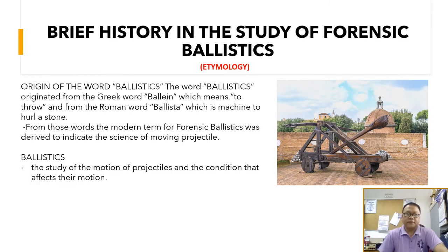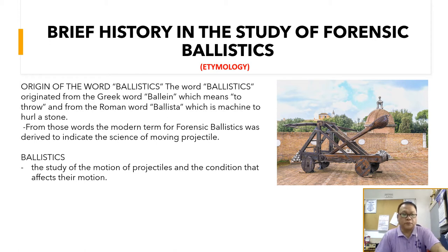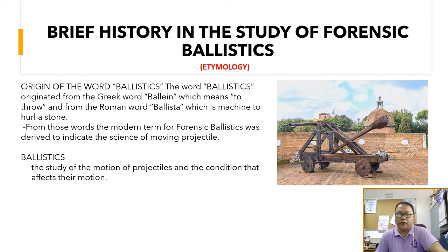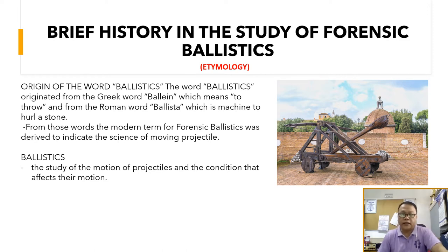Let's go first to a brief history in the study of Forensic Ballistics. As you see in the slides, the origin of the word 'ballistics' comes from the word 'balien,' which means to throw, and from the Roman word 'balista,' which is a machine to hurl a stone. In the picture, you can see the ancient weapon that soldiers used to hurl a stone against their enemies. In our modern times, the equivalent of this weapon is a ballistic missile.